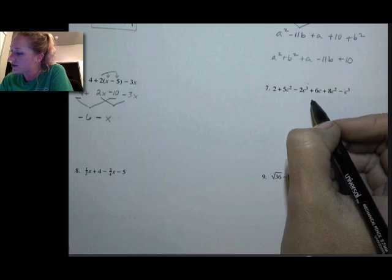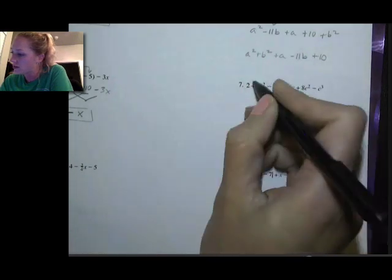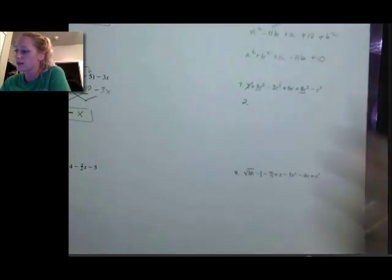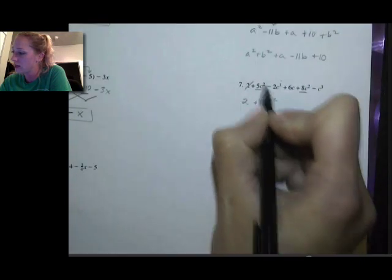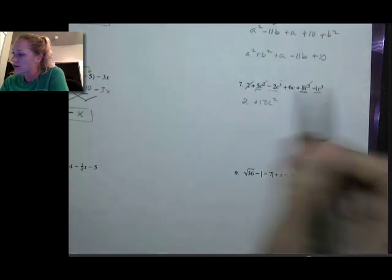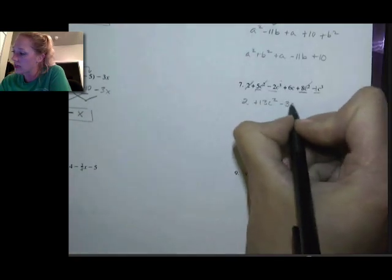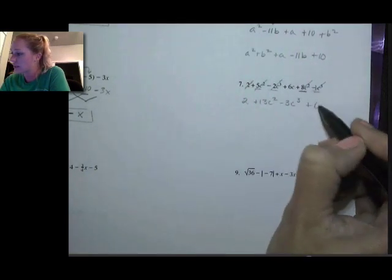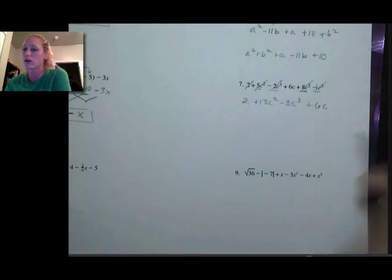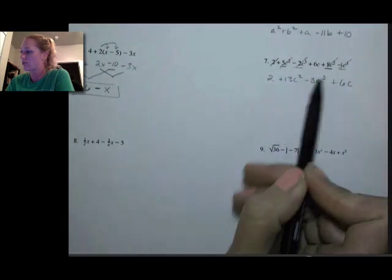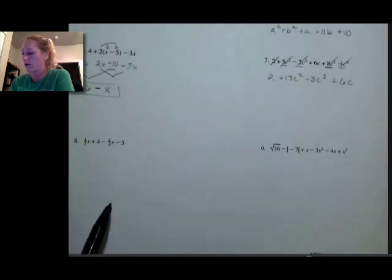Example 7: 2 — I don't see any other regular numbers, so 2 stays exactly the same. C squared: I have a 5 and an 8, both positives, so it's going to be plus 13c squared. Now I have c cubed: negative 2 and negative 1, so negative 2 plus negative 1 is negative 3c cubed, keeping the variable part exactly the same. And then all I have left is plus 6c. Those exponents are different, which is why I cannot combine those c variables any further.